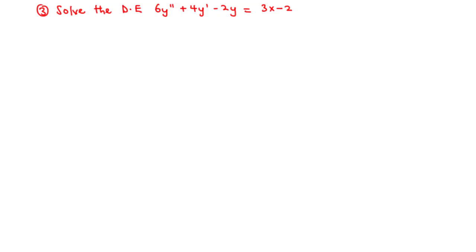For examples 3 and 4, we are going to consider second-order linear non-homogeneous differential equations where the non-homogeneous term g of x — the function on the right-hand side — is a polynomial. Let's try example 3, and afterwards we try to solve example 4.